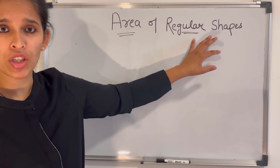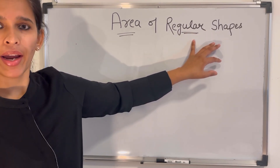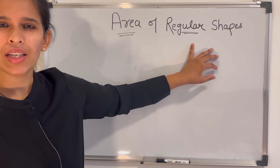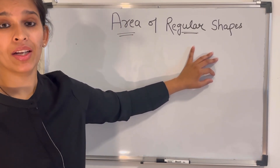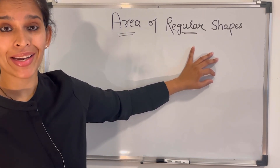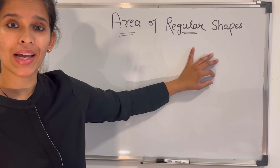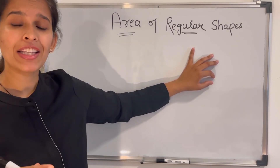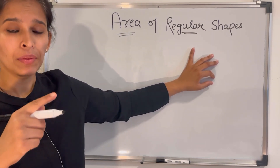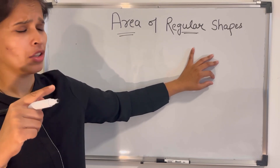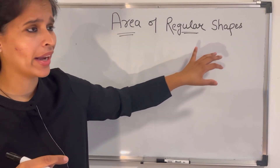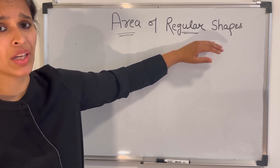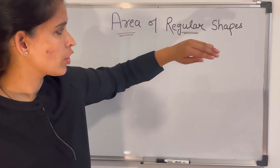Regular shapes are those shapes which have equal angles or equal sides. For example, a rectangle has equal sides, a square has equal sides, and a right angle triangle has equal sides. If all the angles are equal, then those types of shapes are called regular shapes.